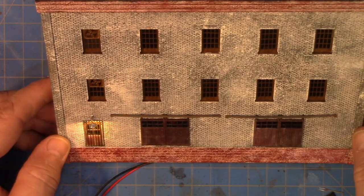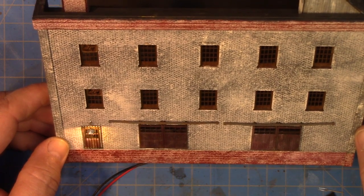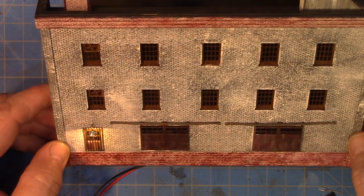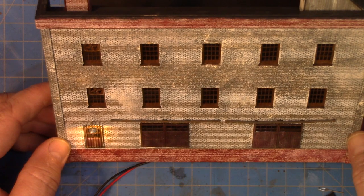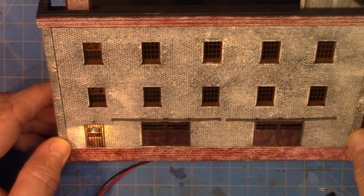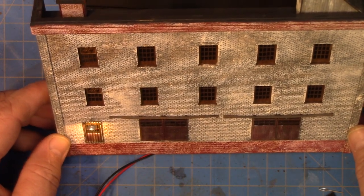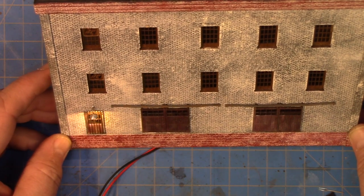So the only thing left to do now is to button it up on the back, take it over to the layout, drop the wires through the hole already existing in the bench work, drop them down, we'll connect them to the DC bus, turn it on, and we'll take a look at what the final result is.